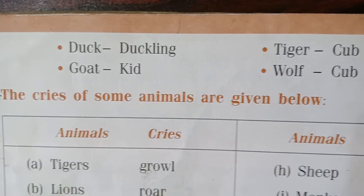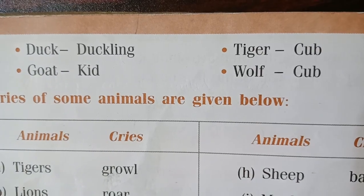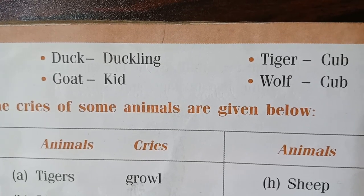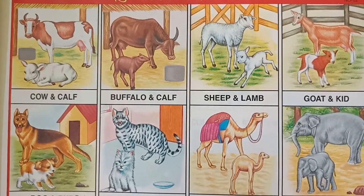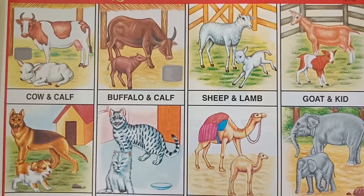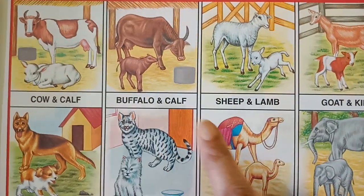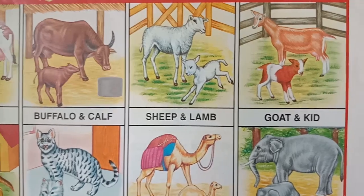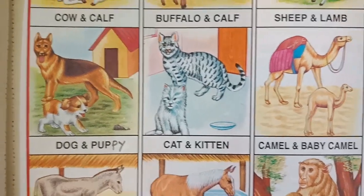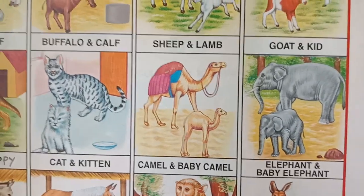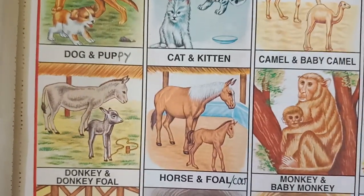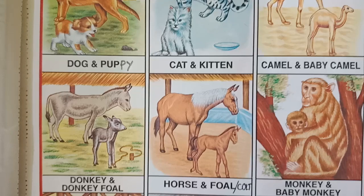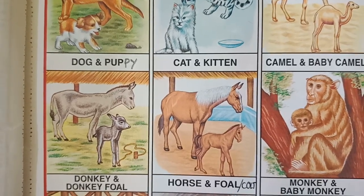Duck — duckling. Goat — kid. Tiger — cub. Wolf — cub. These are the young ones, meaning babies, of these animals. Pictures: cow-calf, buffalo-calf, sheep-lamb, goat-kid, dog-puppy, cat-kitten, camel-baby camel, elephant-baby elephant, horse-foal, donkey-foal.